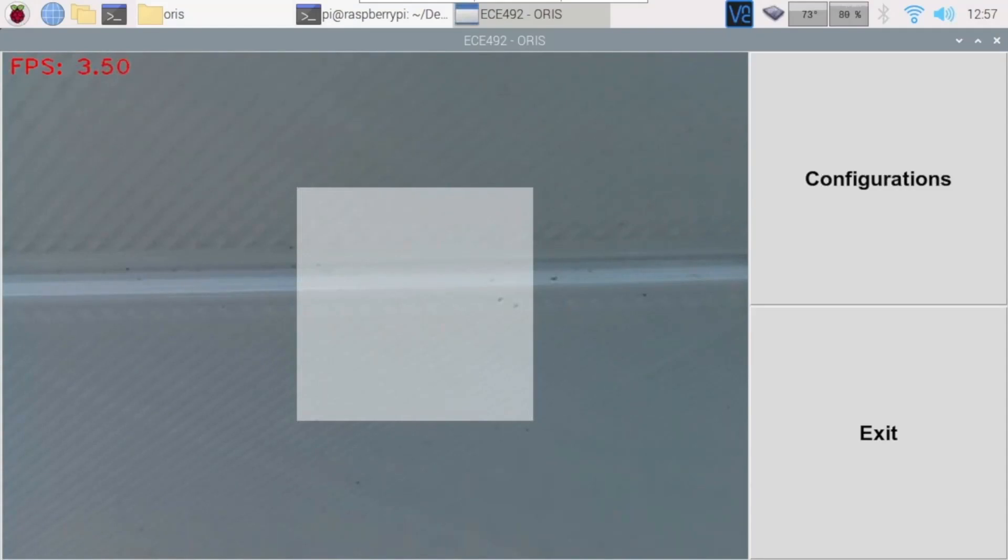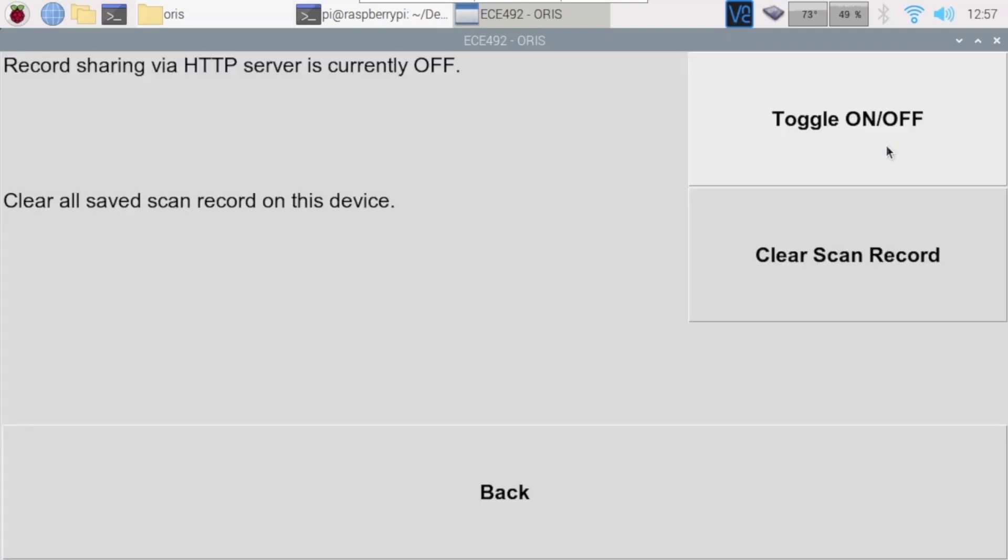Now, we look at the graphic user interface of ORIS. We have the live video stream windows for the detection response and two control buttons for further functions. Inside the configuration menu, we can switch on and off for the record sharing HTTP server, and we can choose to clean up the previous record if necessary.